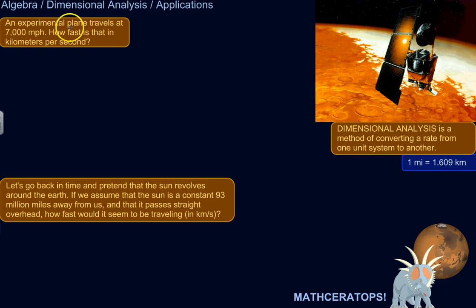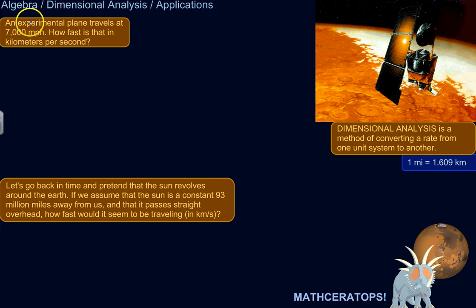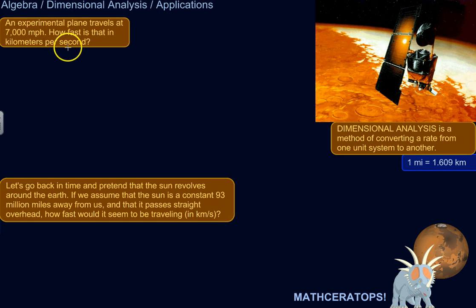This lesson assumes you're familiar with the method of dimensional analysis and how to actually do it. I'll explain as I go along, but not in too much detail, so if you need to refresh that, go ahead. An experimental plane travels at 7,000 miles per hour — how fast is that in kilometers per second? We want to take something in the customary system, miles per hour, and convert it into the metric system with kilometers instead of miles, and seconds instead of hours.